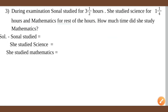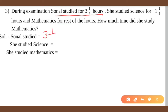Then the third question is: During examination, Sonal studied 3 and a half hours — that means 7 by 2 hours. She studied science for 1 and 1 by 4 hours, which we convert to improper fraction: 5 by 4 hours.